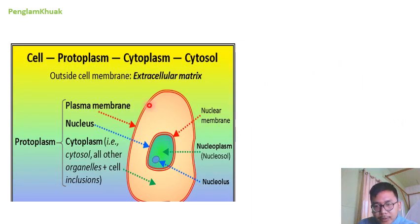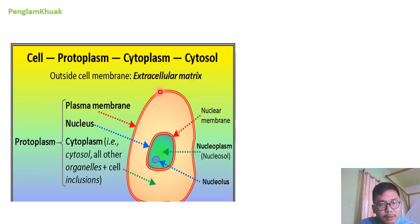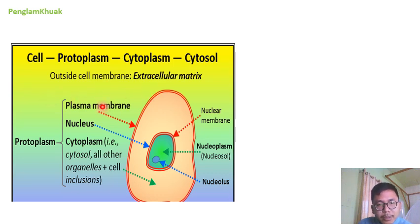This is a picture representing a cell. The components of cells can be further divided into protoplasm, cytoplasm, and cytosol. When we talk about the extracellular matrix, it will include everything outside the cell membrane or plasma membrane. Cell membrane and plasma membrane are synonymous — they are the same.